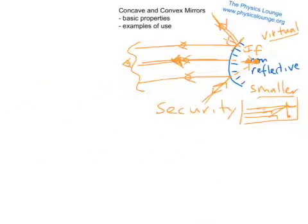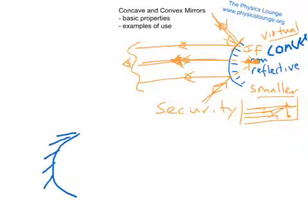So the other one that we want to consider is our concave mirror. Convex. And our concave mirror looks like a cave. And the non-reflective side is on that, they're both curved the same.